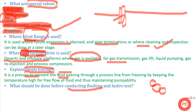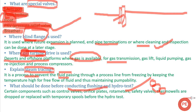The next question is: what should be done before conducting flushing and hydro testing? Before hydro testing, control valves, rotameters, safety valves, thermowells, and other sensitive instruments are removed from the system and replaced with temporary spools. This is because hydro testing is conducted at approximately 1.5 times the design pressure, which could damage or cause leakage in those components.